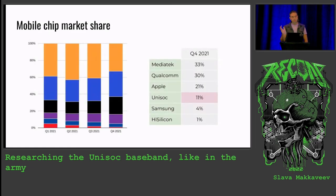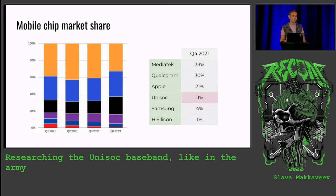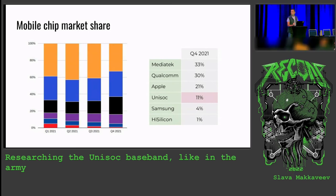Unisoc is the fourth largest mobile chip manufacturer after Mediatek, Qualcomm, and Apple. And in 2021, Unisoc sales increased quarter by quarter, so it's very promising.